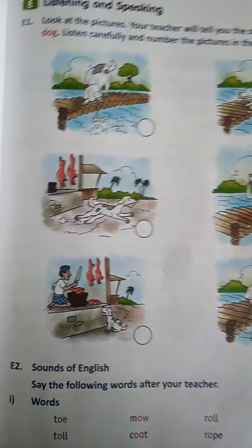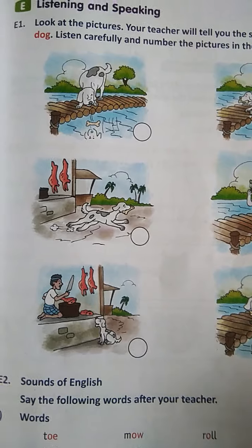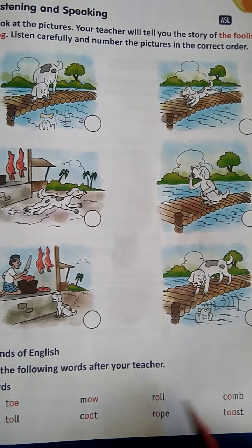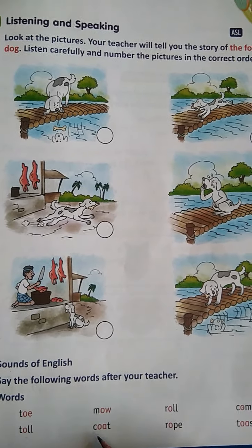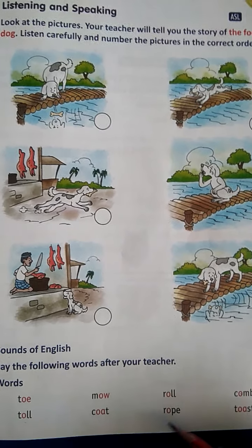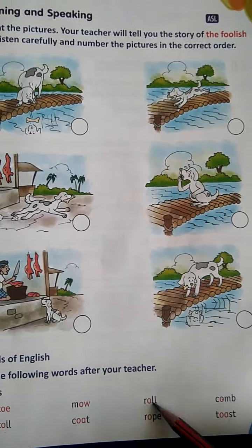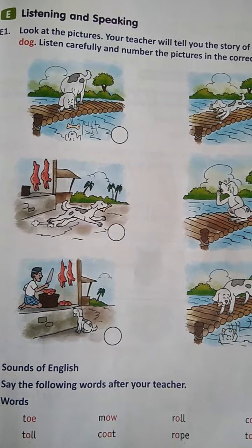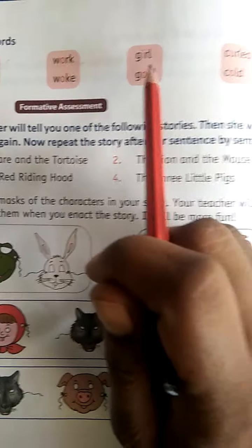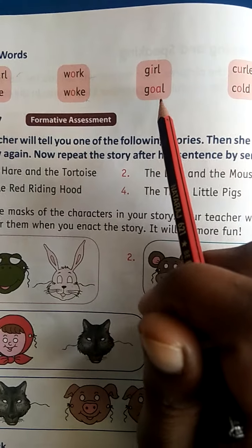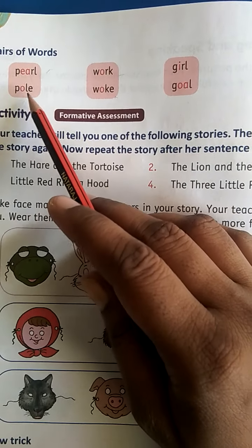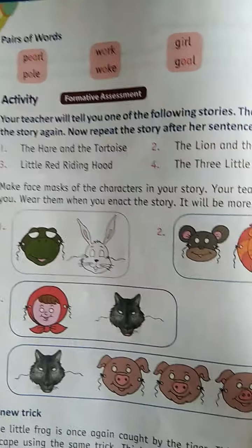Page number 69 — Sounds of English. Yeh jo exercise aapko di hui hai, isko aap achhe se read kiya karein — isse aapko pata chalega ki kis word ko kaise pronounce karte hain. Dekho: Toe, Mo, Roll, Calm — aur yahan: Toe, Code, Rope, Toast. Yahan thoda zyada stress dena pad raha hai — Code, Rope, Toast. Yahan aasaani se: Toe, Mo, Roll, Calm. Yeh difference aap samajhne ki koshish karein. Pair mein di hui hai words ki sound: Pearl, Work, Girl — Pole, Walk, Goal, Cold. Yahan bilkul halke se bol pa rahe hain, yahan thoda sa stress dena pada hai. Aap bas inko read karna hai, likhna nahin hai.